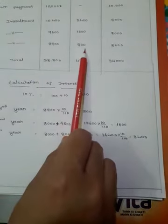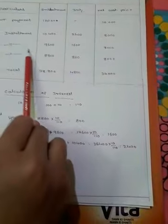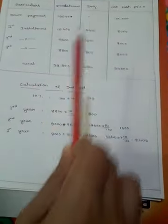8,800 minus 800, we calculate the net cash price. 8,000 per annum is 8,000. Again, 2nd installment is 9,600.